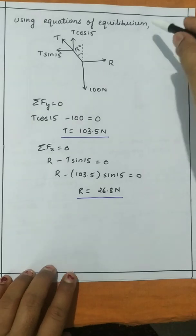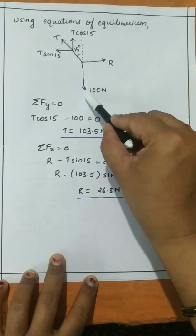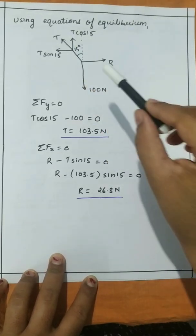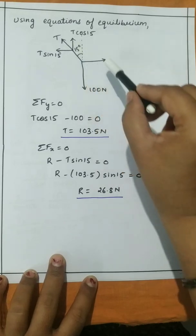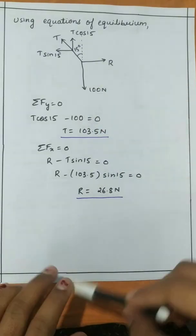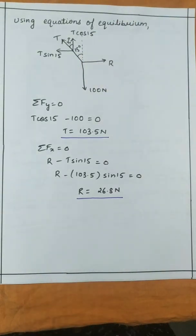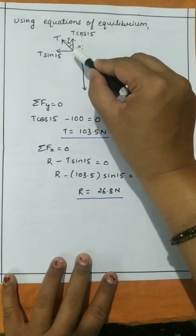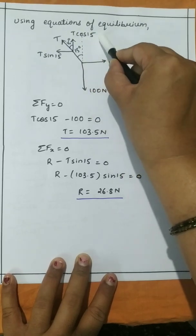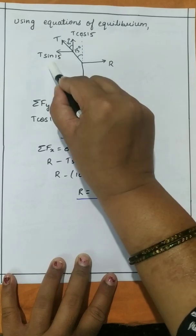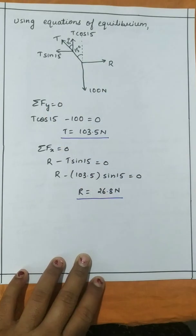Now let us verify using equations of equilibrium. There are three forces: one is horizontal (R), one is vertical (100 N), and we need to resolve the tension T into components. The tension makes an angle of 15 degrees with the vertical. So T cos 15 is the vertical component and T sin 15 is the horizontal component.